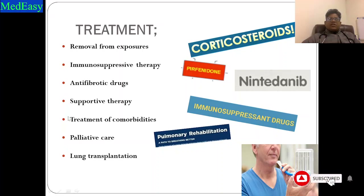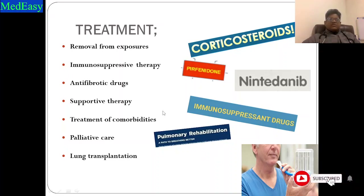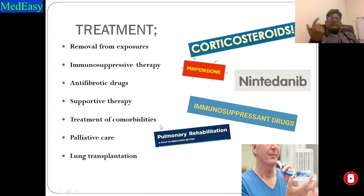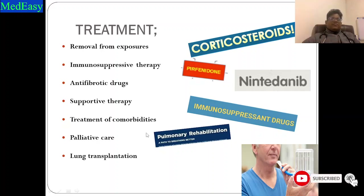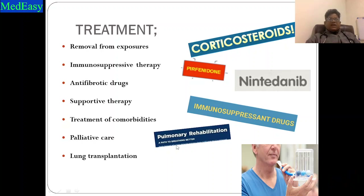Supportive therapy includes pulmonary rehabilitation, spirometry, and arm-stretching exercises to improve exercise capacity and 6-minute walk test performance. Comorbidities should also be treated — gastroesophageal reflux disease causes microaspiration and further lung damage in ILD patients. Palliative care and lung transplantation are limited options for patients with advanced and severe ILD.